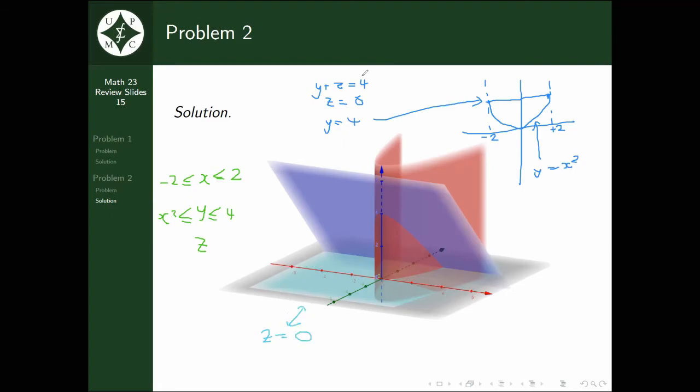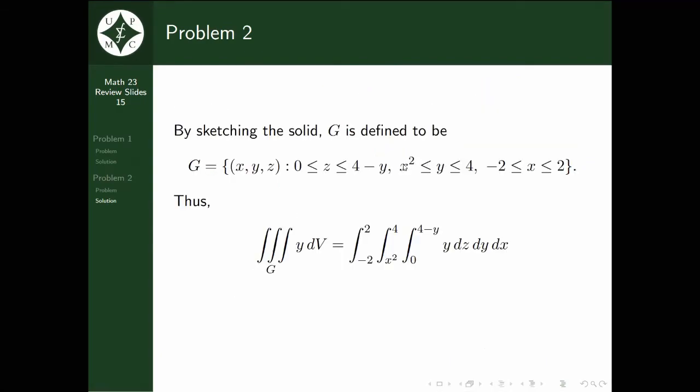We can write z ≥ 0, but for the dark blue plane, we have to transform this into a form where it's z equals something. We do that by transposing the y, and then we get z = 4 - y. So y is bounded on the top by 4 and on the bottom by x². z is bounded on the top by 4 - y and on the bottom by 0. And x is between -2 and 2.